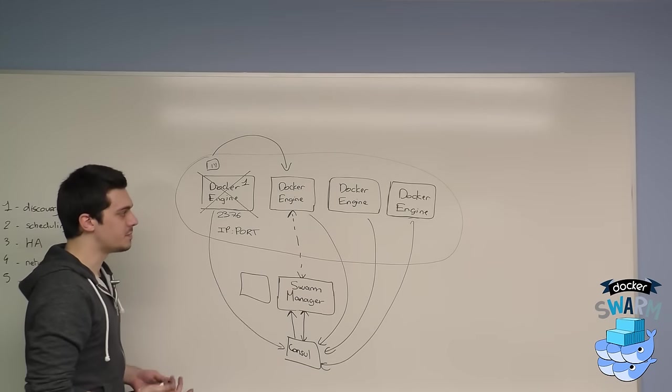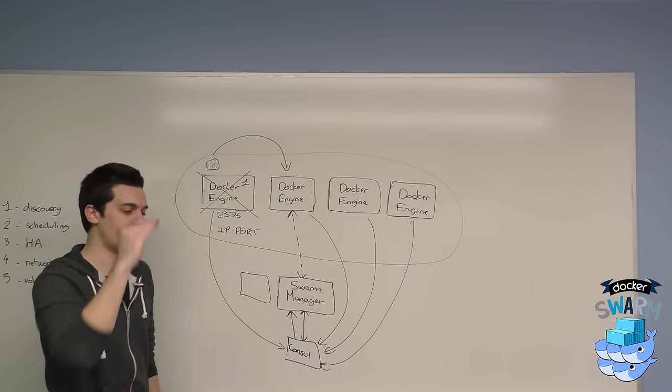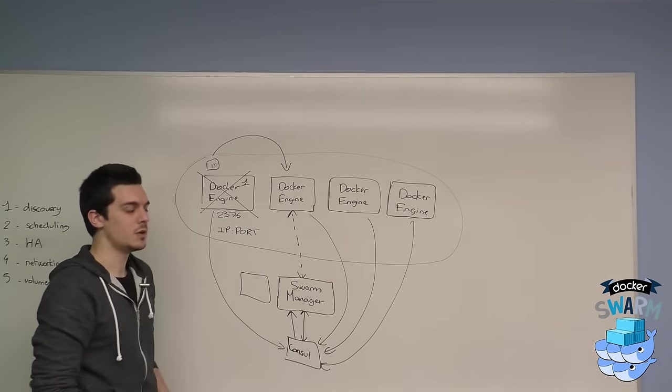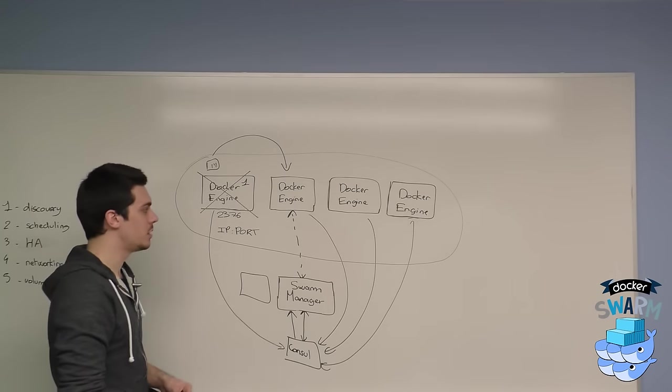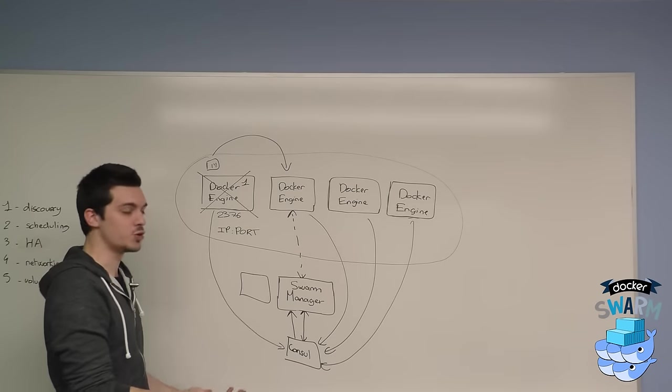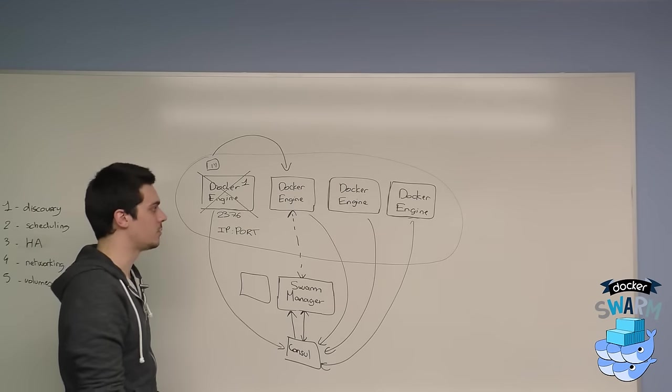The other basic methods are file, static file. You define the IPs and it connects to the IPs. You lose some of the benefits of using the distributed store. But it will also work if you want to try Swarm and if you want to test it right away.